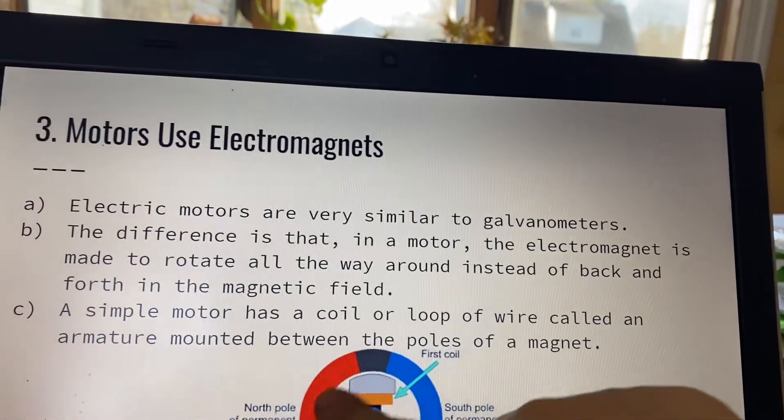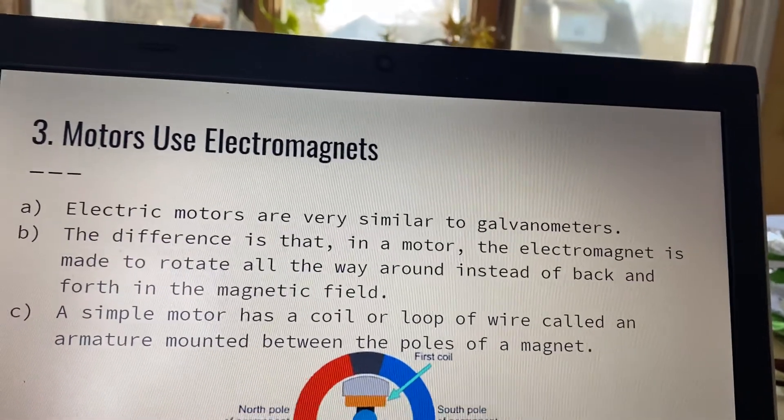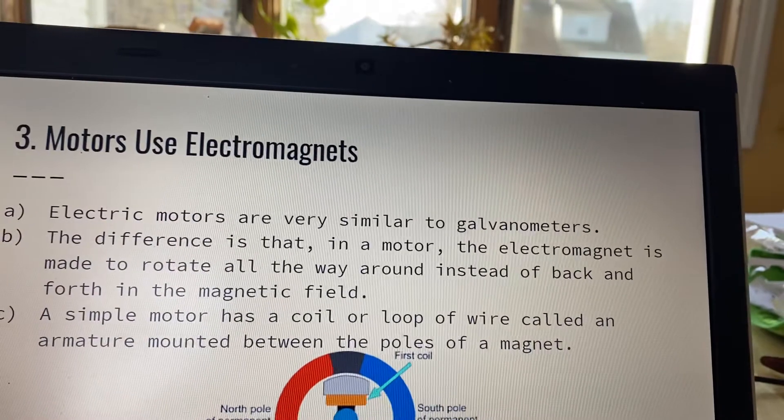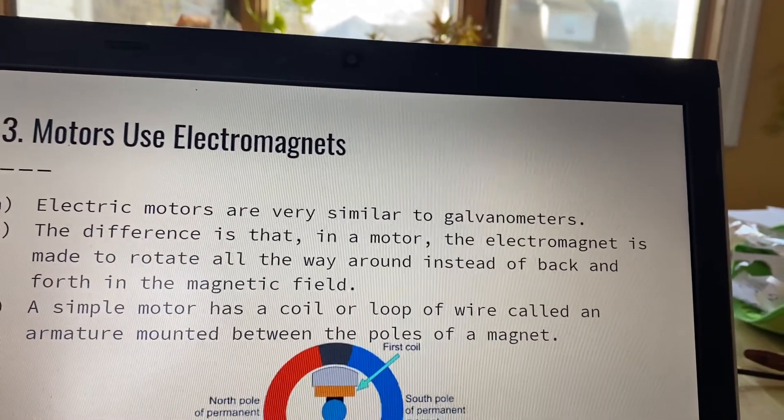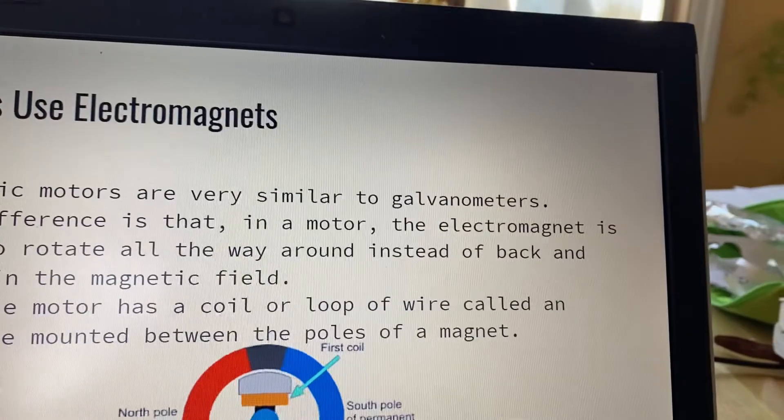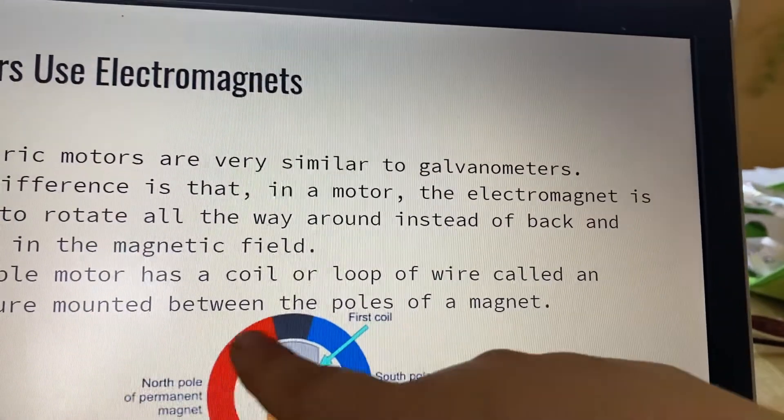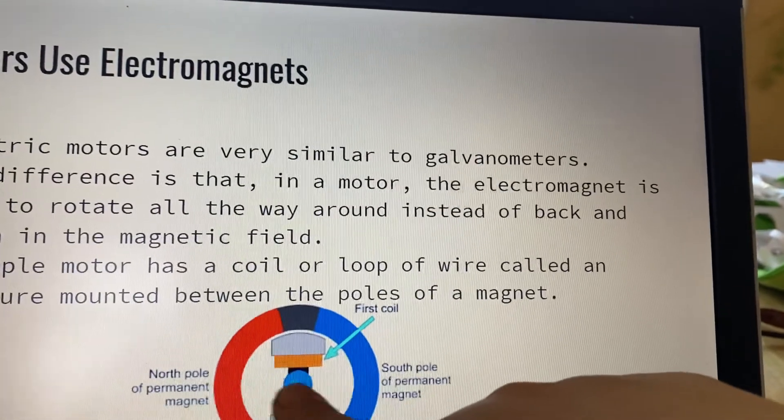So this will actually move completely around. A simple motor has a coil or loop of wire called an armature mounted between the poles of a magnet. So here we have the first coil, the second coil. This is the south pole of the permanent magnet, the north pole of the permanent magnet, and this will be allowed to move around.